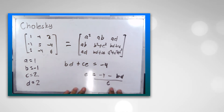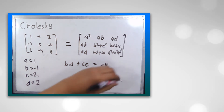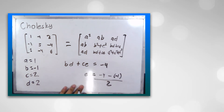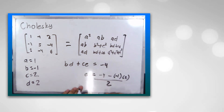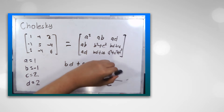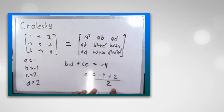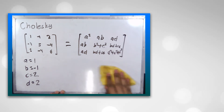We know the value of c is 2, the value of b is negative 1, and the value of d is 2. For e: b*d plus c*e equals negative 4. Substituting: negative 1 times 2 gives negative 2, so negative 2 plus 2e equals negative 4, which gives negative 4 plus 2 over 2, so e is equal to negative 1.